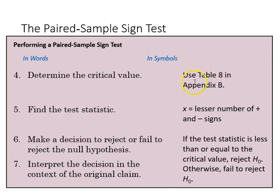We then find our critical value using our table, and then we find our test statistic using x as the lesser number of plus or minus signs. We then make a decision to reject or fail to reject the null. If the test statistic is less than or equal to the critical value, we reject H0, otherwise fail to reject, and then we interpret the decision in the context of the original claim.